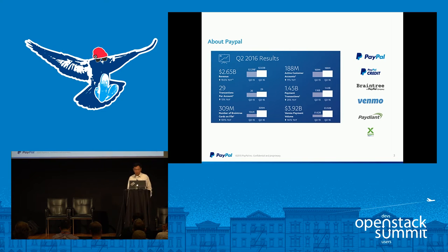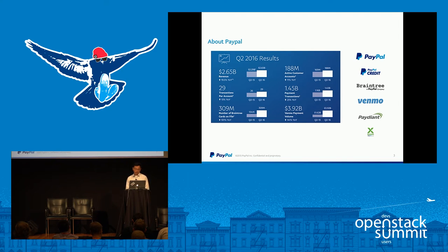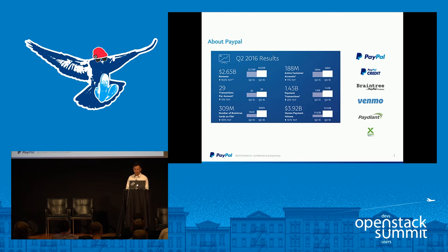Just a brief introduction to PayPal. As you may or may not know, PayPal is a Fortune 500 company with a revenue of about $2.6 billion per year. This slide gives some of the financial data. I'm not going to give a line-by-line description. What I can say is PayPal is a big company with many subsidiaries.